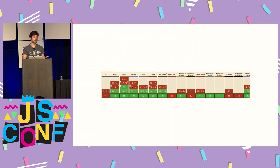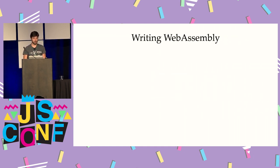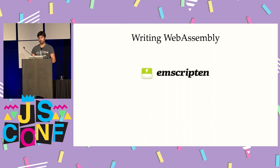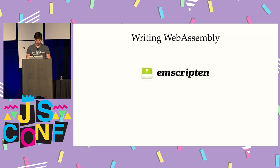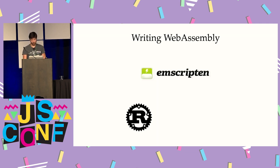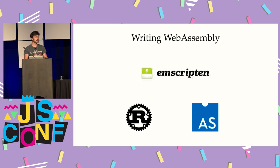How do we write WebAssembly? The first solution I used is Emscripten — a project that is a C++ to WebAssembly compiler. It takes your C++ code base, runs it through Clang, a C++ compiler, and translates the output to WebAssembly. There are other solutions like Rust or any language that compiles to WebAssembly, or even things like AssemblyScript, which allows you to create WebAssembly using a syntax that looks like TypeScript — which is really interesting.